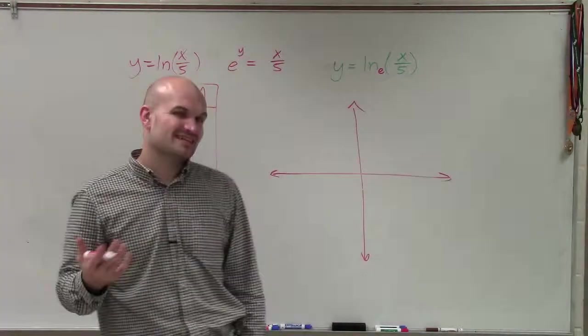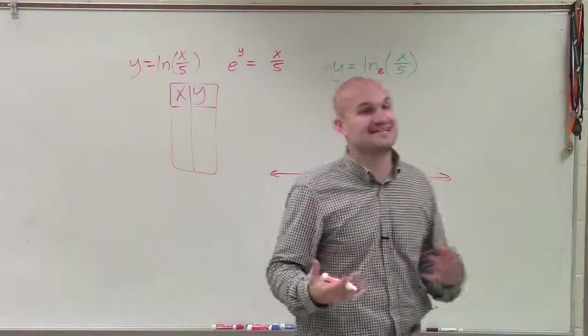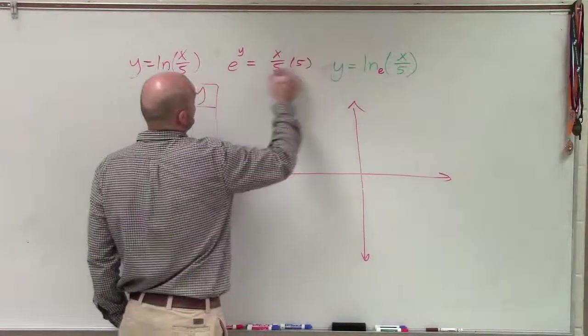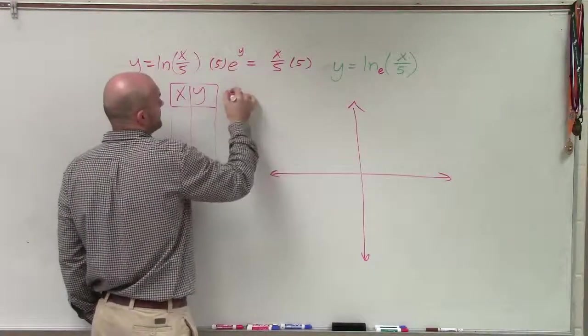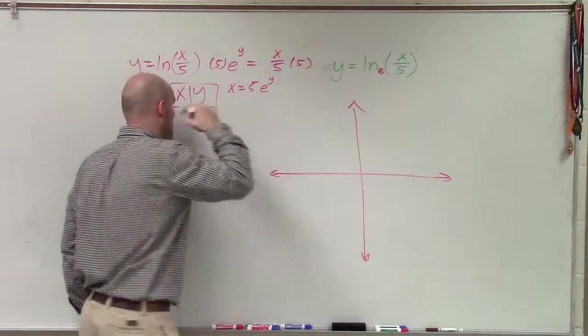Now, ladies and gentlemen, when we're dealing with e, it's going to be a little bit more difficult than just saying I want to have these integers, because we understand e is an irrational number. So I can multiply by 5, and therefore my x values are going to equal 5 times e to the y.